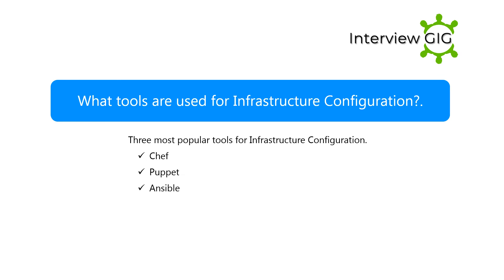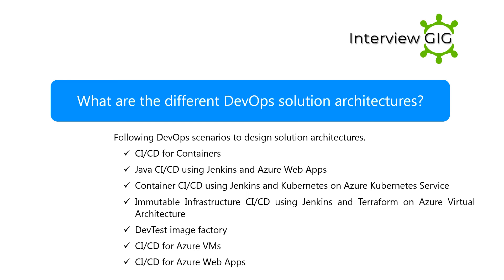What tools are used for infrastructure configuration? The three most popular tools for infrastructure configuration are Chef, Puppet, and Ansible.